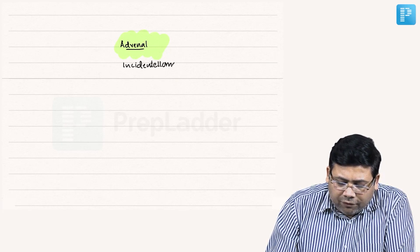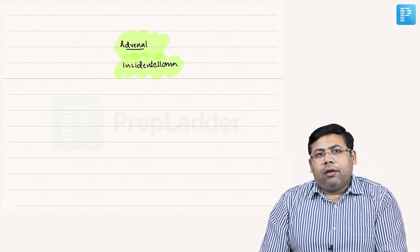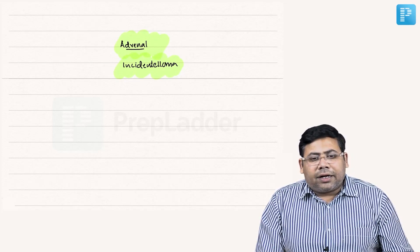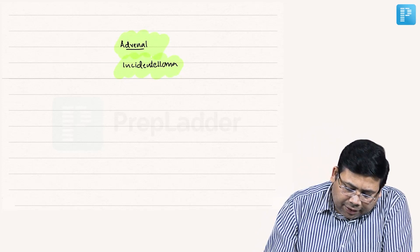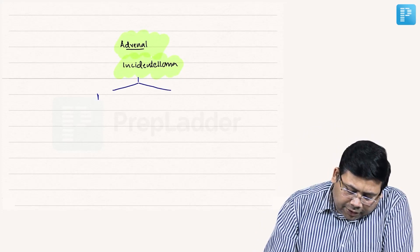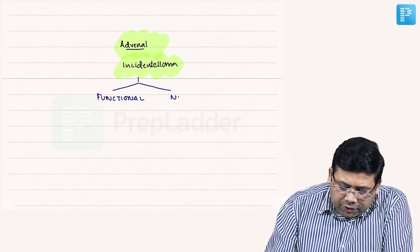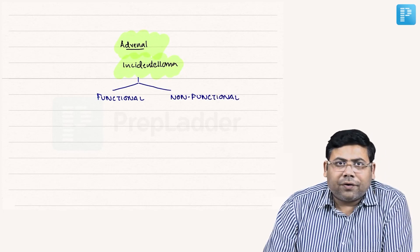Whenever we are addressing adrenal incidentaloma, the majority of us want to understand whether it's functionally active or inactive. Adrenal incidentaloma is of two types: either it could be a functional tumor or it could be a non-functional tumor. How do we see adrenal incidentaloma in a functional versus non-functional interface?